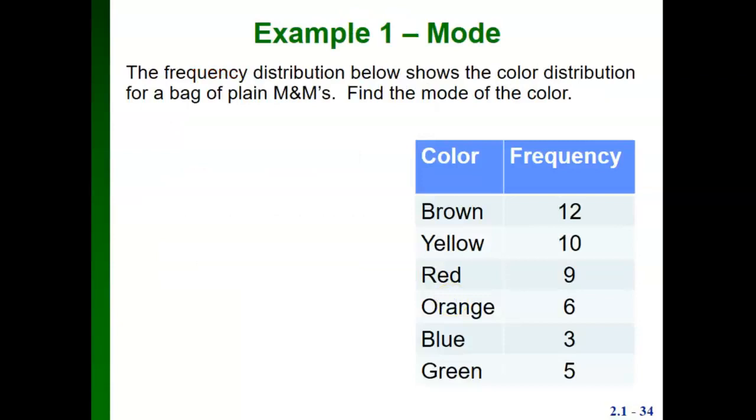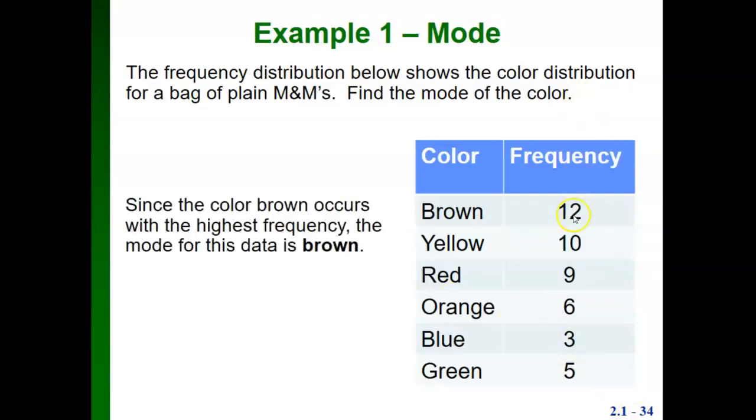Here's an example where we could use the mode and couldn't use the mean or median. If we have a frequency distribution for the colors of M&Ms in a bag of plain M&Ms, this is nominal data. Our data is the colors of the M&Ms and those are just words. There's no real order we can put this in that would be meaningful. To find the mode, we're just looking for the value that occurs more than any other one. That would be brown because there were 12 brown M&Ms, more than any other color.